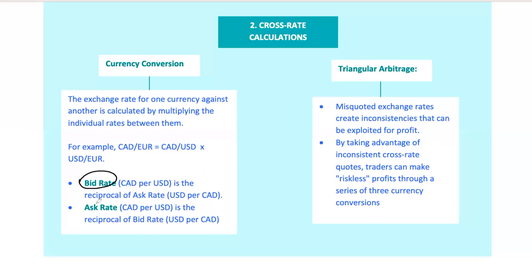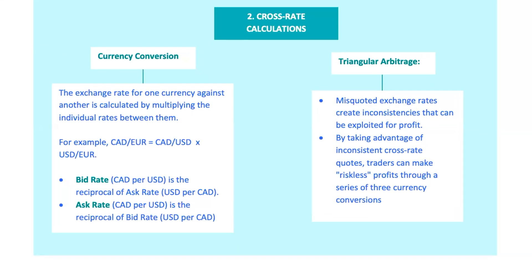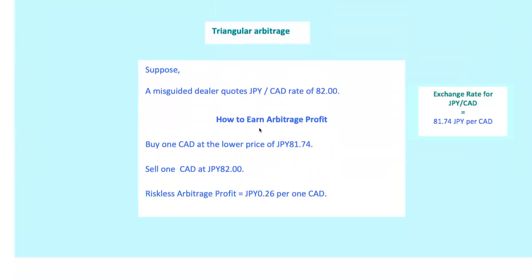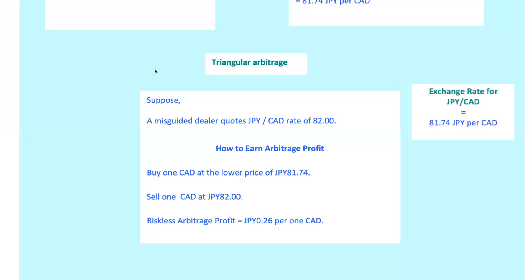Now let's talk about bid and ask rates. The bid rate for CAD per USD is the inverse of the ask rate for USD per CAD and vice versa. This is crucial when considering triangular arbitrage, where discrepancies in these rates can lead to riskless profit opportunities. Triangular arbitrage comes into play when the cross rate quote isn't consistent with these calculations. For example, if a dealer quotes Japanese yen per CAD at 82, you could buy Canadian dollars at 81.74 Japanese yen, sell at 82, and make a riskless profit of 0.26 Japanese yen per Canadian dollar. This is called triangular arbitrage because it involves three currencies.